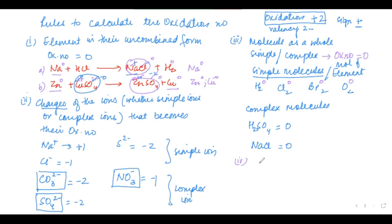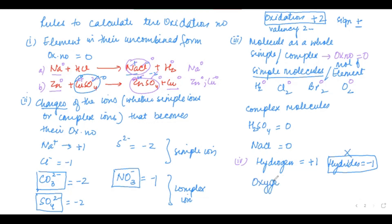Rule number 4: certain elements have fixed oxidation numbers. Hydrogen will always have a fixed oxidation number of +1 — there are exceptions like hydrides where it is −1, but that is outside O-level scope. Oxygen will always have an oxidation number of −2 — there is an exception in peroxides, but that is also outside O-level scope. Using these four rules, we calculate the oxidation numbers in an equation and determine whether they increase or decrease to identify which part of the reaction is oxidation.